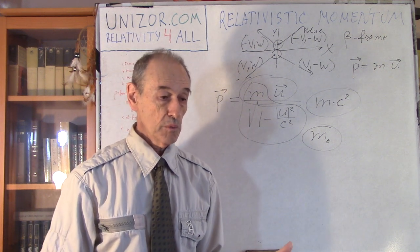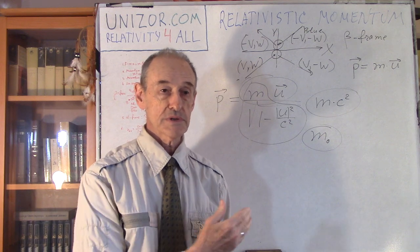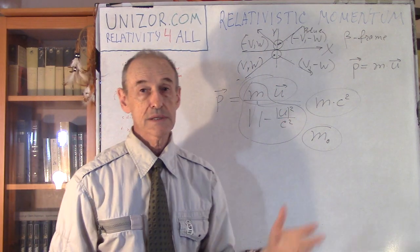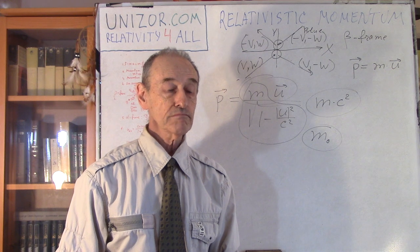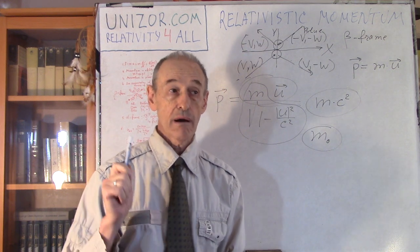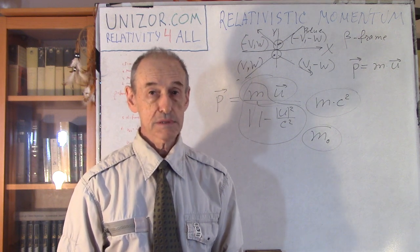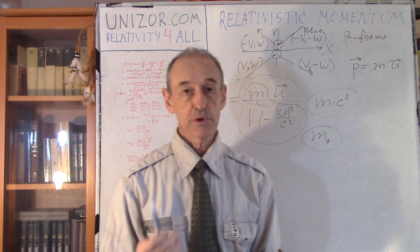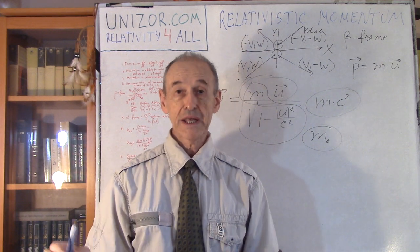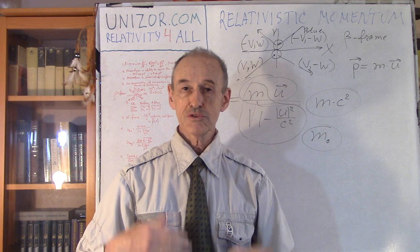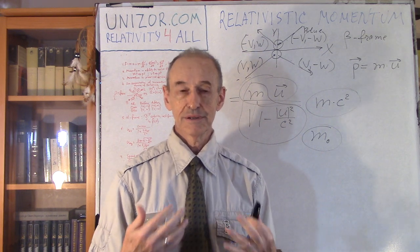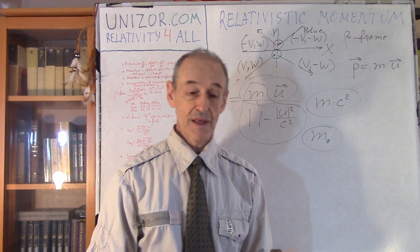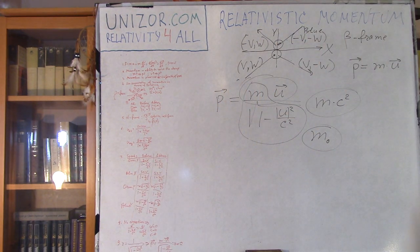The law of conservation of momentum holds. That's it for today. I just wanted to present the concept of relativistic momentum — P = mU / √(1 − U²/c²), where m is the rest mass. I do suggest you read the notes; they are lengthy in this case but very important. For those curious about calculations, it's just plain algebra — go through the calculations to be comfortable that this is the right formula, and there is a proof of it. Thank you very much and good luck.